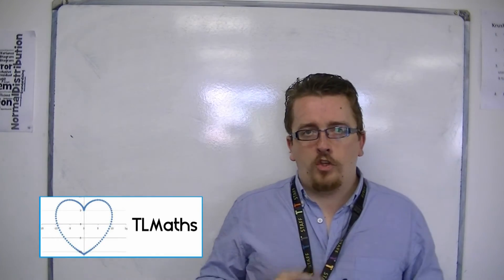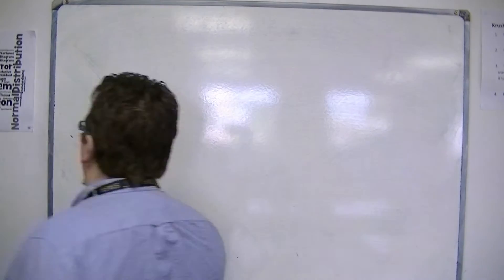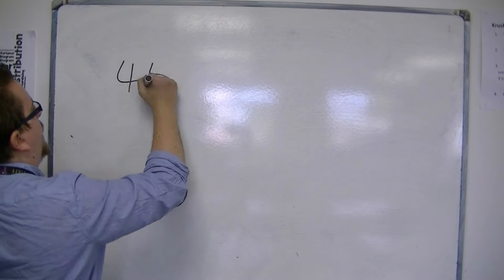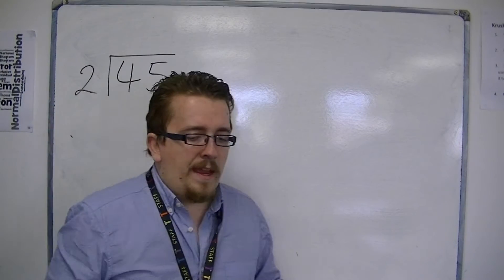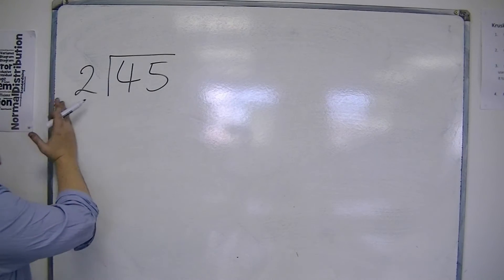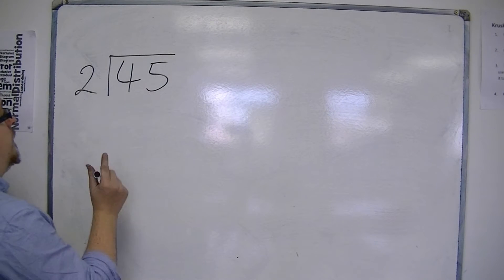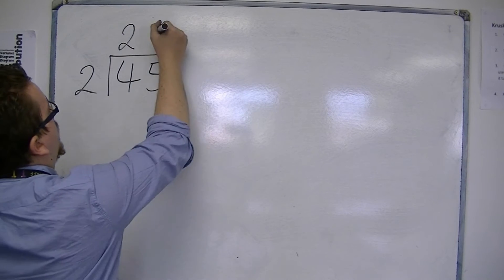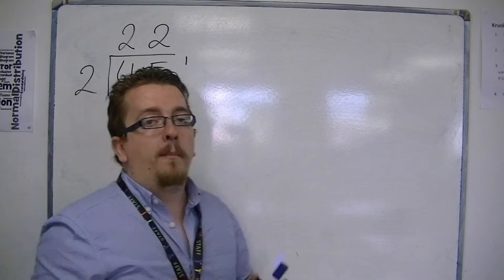So when you're using short division, it can be that if you had a question like 45 divided by 2, then in some cases the number that you're dividing by doesn't go cleanly into the number, into 45 in this case. So 2s into 4 go twice, 2s into 5 go twice with 1 left over, with remainder 1.